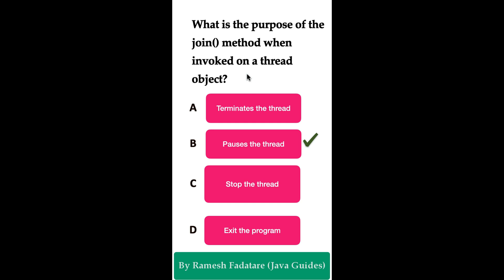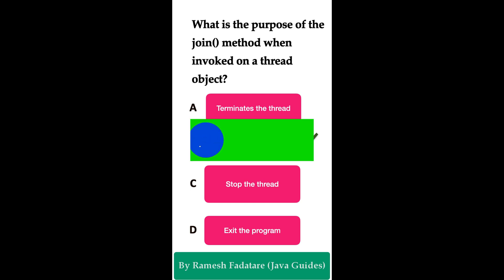The join() method in Java is used to force the execution of the current thread to wait until the thread on which join() was called has finished executing. This is useful when you want to ensure that a particular thread completes its task before the program proceeds further. For example, if you have a thread performing some essential computation and other threads depend on the result of that computation, you can use the join() method to make sure that dependent threads wait for the computation to finish.